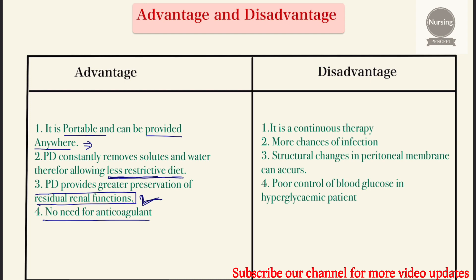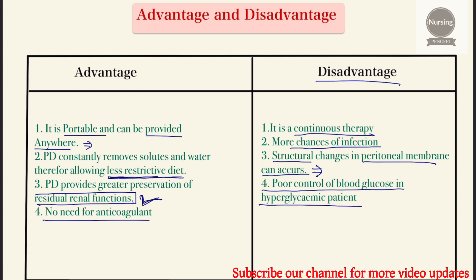The disadvantages of peritoneal dialysis are: first, it is a continuous therapy with more chances of infection, which may occur at the catheter site or in the peritoneal cavity. Second, structural changes in the peritoneal membrane can occur due to the dialysis solution, compromising its function. Third, there is poor control of glucose in hyperglycemic patients, since the dialysis solution contains glucose and may increase blood glucose levels.